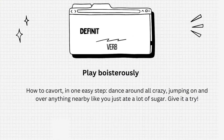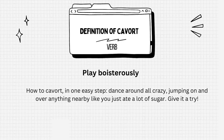Definition of Kavort: play boisterously. How to Kavort? In one easy step — dance around all crazy, jumping on and over anything nearby like you just ate a lot of sugar.